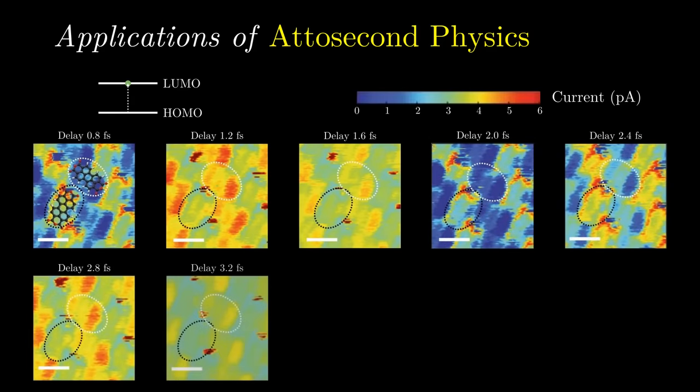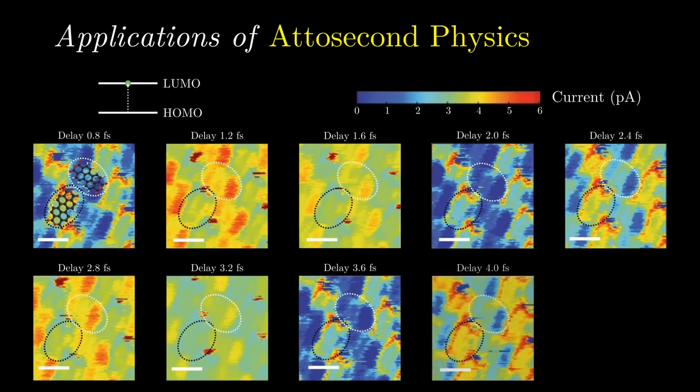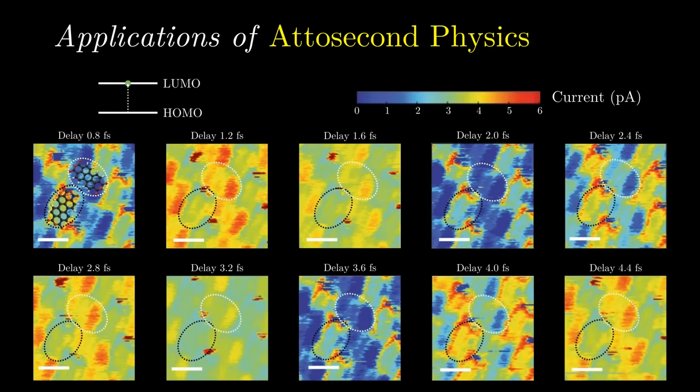The results showed that the electron density oscillates between the HOMO and LUMO roughly every 1.4 femtoseconds. This new capability to image electronic motion in molecules may allow us to better understand chemical transformations which are dominated by electron transfer.